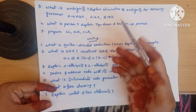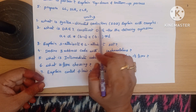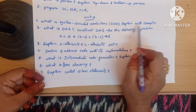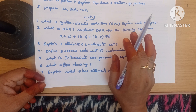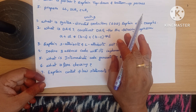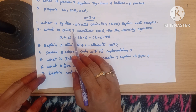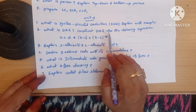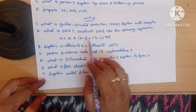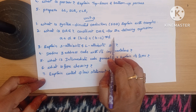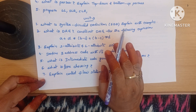Next: prepare LL, SLR, CLR and contrast between these three. Unit 3 long answer questions: what is syntax directed definition — explain with examples. These are all previous JNTU exam paper questions, so concentrate more on these. Next: what is a DAG — construct a DAG for the expression a+d*(b-c)+(b-c)*d.